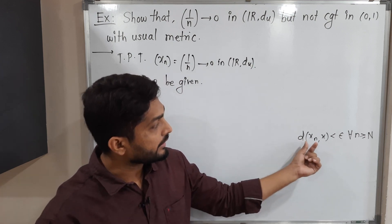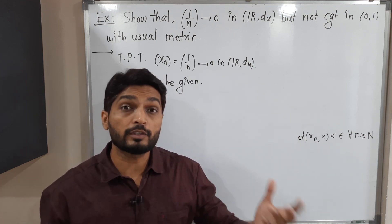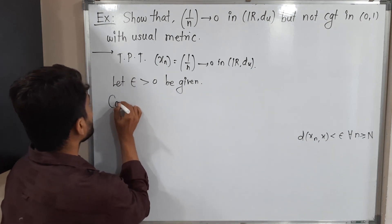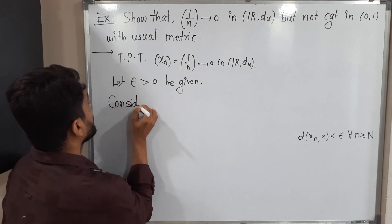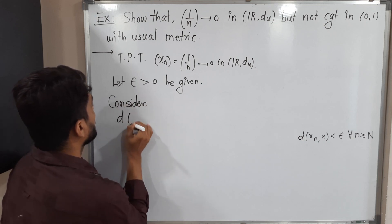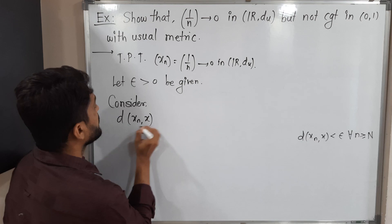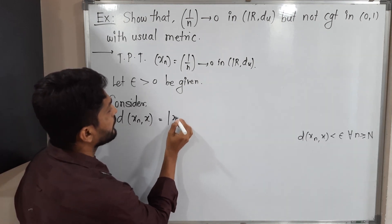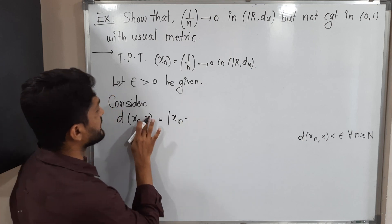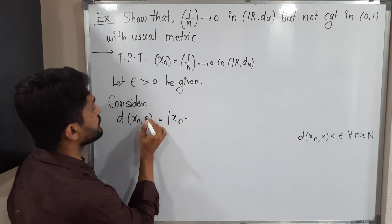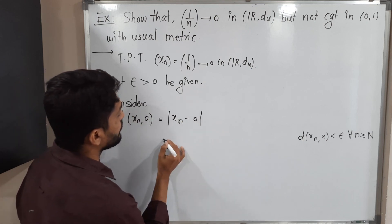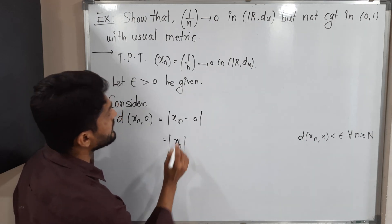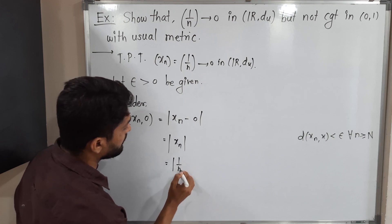I will find D of x_n, x and after that we will decide what should be our N. Let us consider D of x_n, x. So here D is the usual metric, so it is defined in this way. D of x_n, x, where the sequence converges to 0, so x_n minus 0. So x_n minus 0 is obviously x_n. What is our x_n? Sequence x_n is 1 by n. So mod 1 by n.